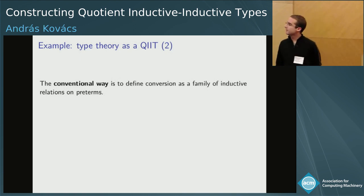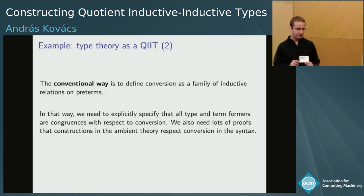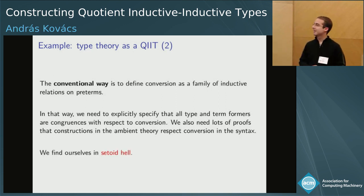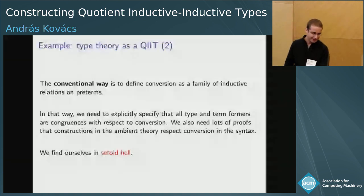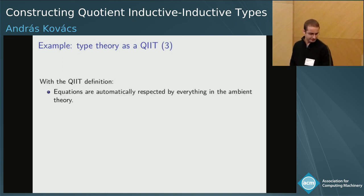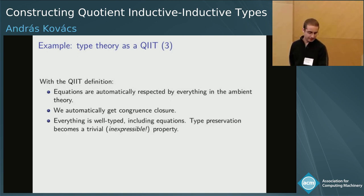The conventional way would be to define conversion as a family of inductive relations on preterms, but there are two main problems. One is that we need to explicitly specify that everything inside the syntax is a congruence. The other is that we need lots of proofs in the metatheory that metatheoretical constructions also respect this conversion relation — sometimes this state of affairs is called 'satellite hell'. With the QIIT definition, equations are automatically respected by everything. Any random function is a congruence with respect to conversion, and we automatically get congruence closure in the syntax. Type preservation becomes a trivial property — actually not even expressible — because you are working at a higher level of abstraction.